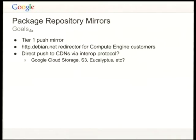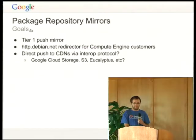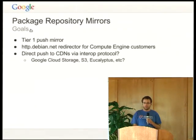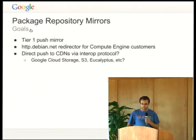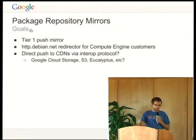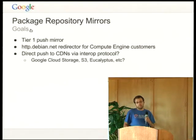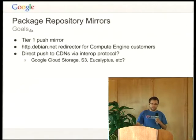Things we'd like to evolve toward: it would be great to talk to the FTP team and mirror admin team about becoming a tier-one push mirror, since Debian is a very common OS choice for users in the Google Cloud. We may also want to get our mirror added to Raphael's redirector service, HTTP.debian.net, for customers visiting from Compute Engine. Amazon is using CloudFront to serve a mirror in their cloud; we're trying Google Cloud Storage — a similar concept. It would be great to have an interoperable way to do a direct push to CDNs across multiple clouds.